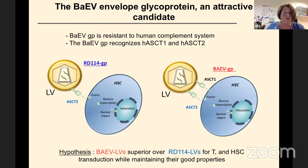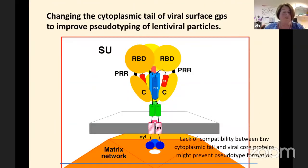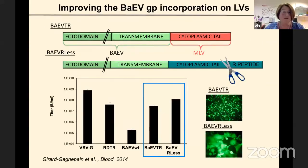First of all, we chose to pseudotype a lentiviral vector with a baboon retroviral endogenous envelope glycoprotein. The reason is it's quite resistant against human complement, so one could inject it in vivo. Most importantly, it recognizes two receptors which are amino acid transporters, ACT1 and ACT2, and these receptors are highly present on T cells, B cells and stem cells.